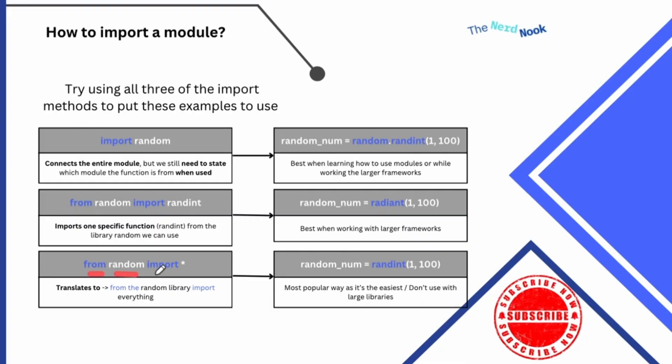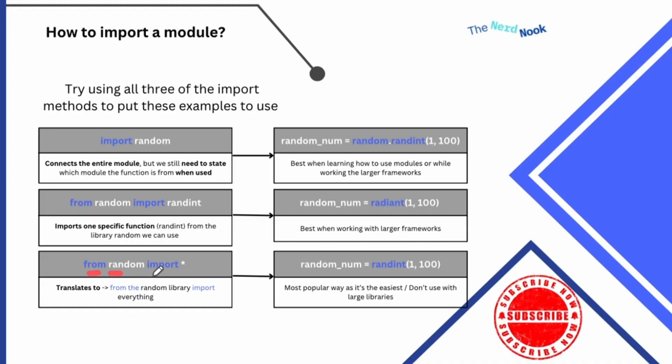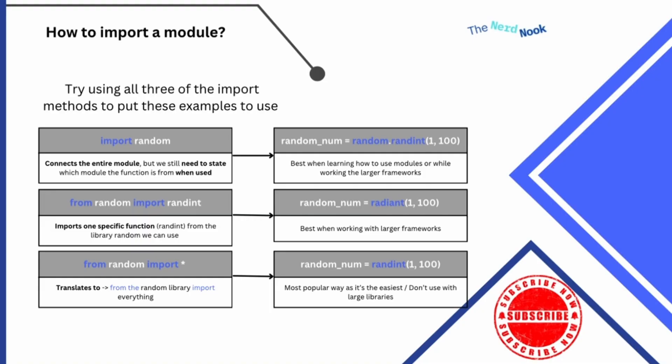The last thing, and honestly my favorite one — but be careful — is you could say from random import star. Literally, star means everything. You'll see this in coding, in SQL. This literally translates to: from the random module import absolutely everything. Now you have access to everything in the random module. This is the most popular way as it's the easiest, but be careful — you don't want to use this with big libraries, big modules. It's going to break your code and get confused. Random is an easy one. Math is an easy one. Most built-in Python modules you can import star. Anything else? Caution.